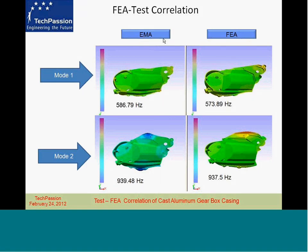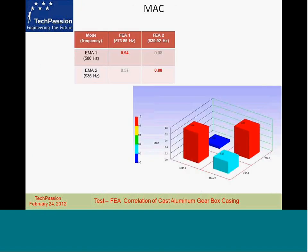The third modal parameter extracted is mode shape. So you have experimental modal analysis and finite element analysis — we are looking at the first mode and second mode. The correlation of the mode shape will be far more clear when I show the live demo and the animations. Correlation is captured using the model assurance criterion. This shows experimental modal analysis on one side, finite element analysis on the other, with a MAC of 0.94 — a 94% correlation between test and FEA — and 88% correlation for the second mode.